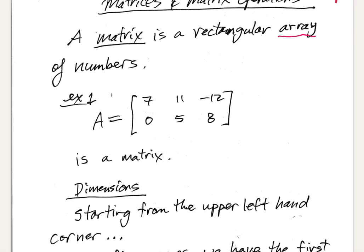Here's example one — this is an example of a matrix. It looks like a rectangular array of numbers. I use square brackets, though some people use big parentheses. It's typical to give a matrix a name using a capital Latin letter, so here I've given this matrix the name A. Reading across, we have 7, 11, -12, 0, 5, 8.